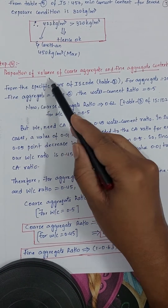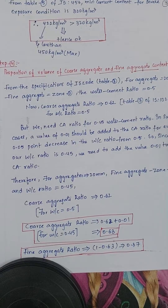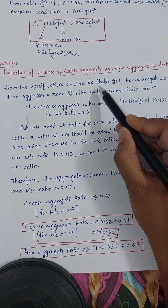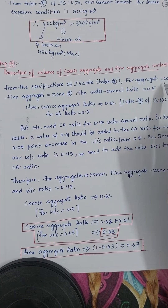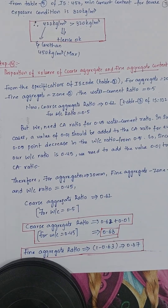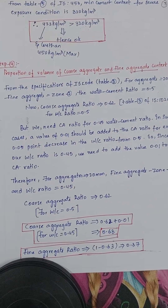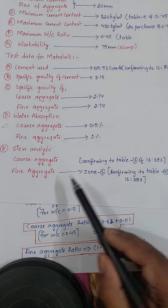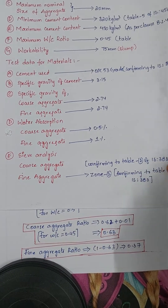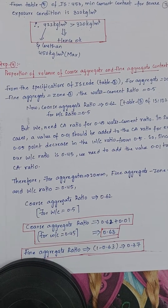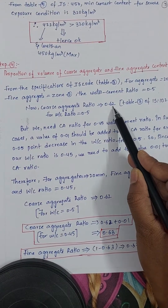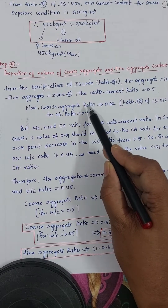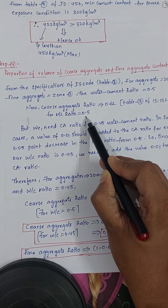Step 4: find the proportion of coarse aggregate and fine aggregate. From IS 10262:2009 table 3, for 20 mm aggregate and fine aggregate zone 2, the coarse aggregate ratio is 0.62 for a water cement ratio of 0.5.